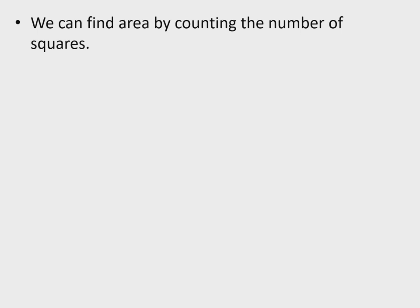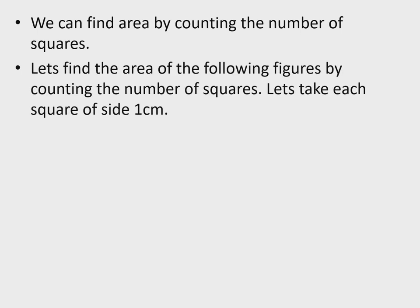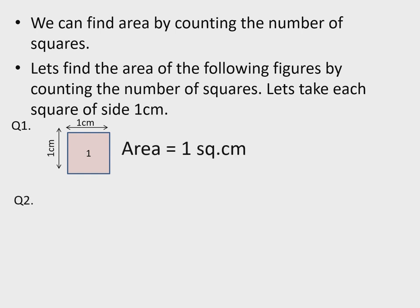We can find area by counting the number of squares. Let's find the area of the following figures by counting the number of squares. Let's take each square of side 1 cm. Question 1: the figure is covering 1 square, so area is 1 square cm.